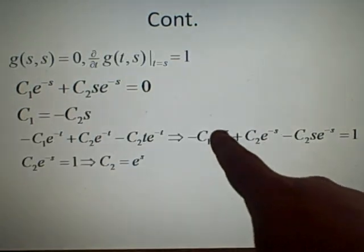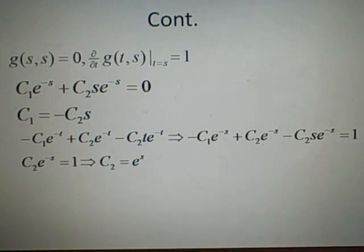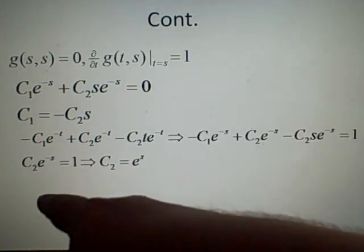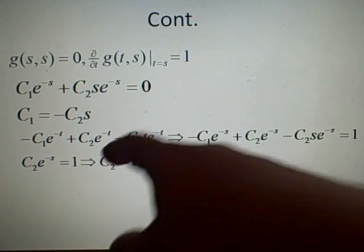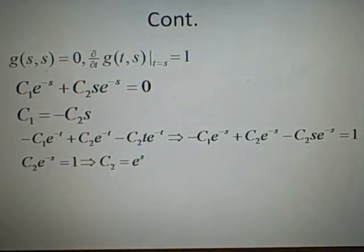this and this will cancel, leaving just C2 e to the minus s, which is 1. Move the e^s up, so C2 is e to the power s. And using that, we can get C1 is minus se to the power s.